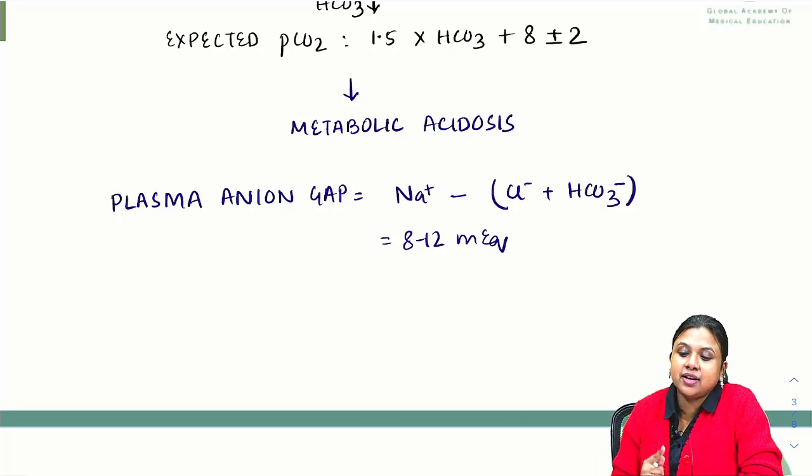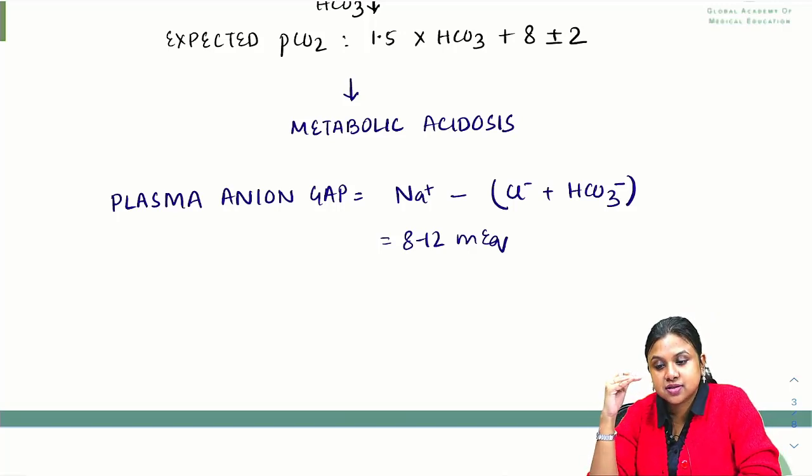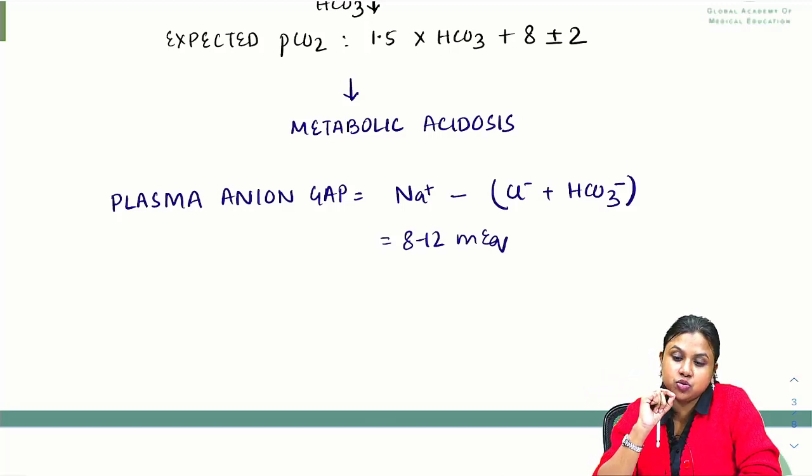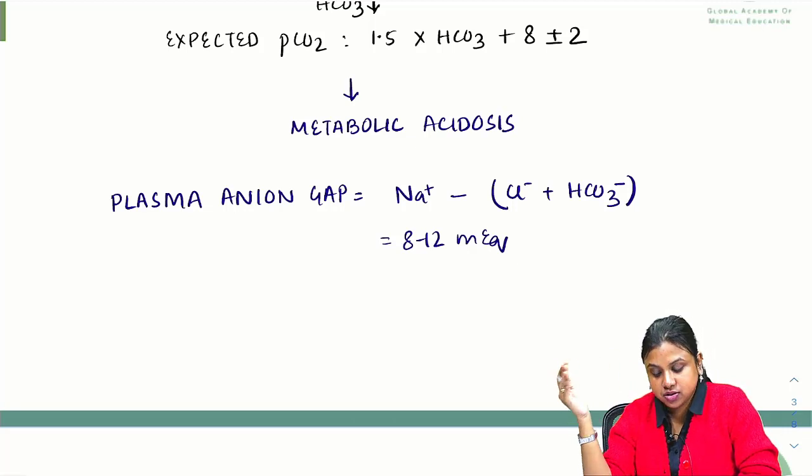If it falls under this range, we call it normal anion gap metabolic acidosis. If it is higher—we take the higher value to be 16—if it is more than 16, then we call it high anion gap metabolic acidosis.